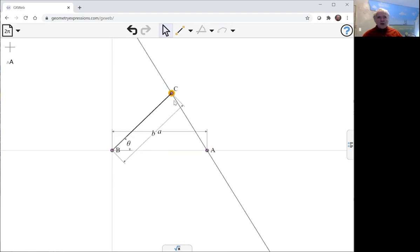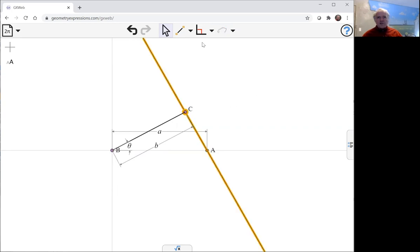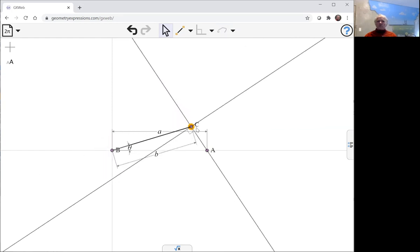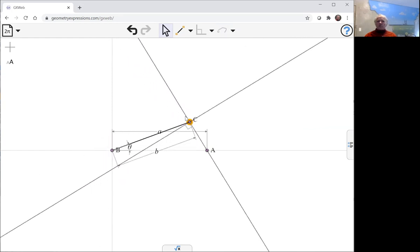Now if we create a line through c perpendicular to this line, then that is going to be the one which envelops the hyperbola.